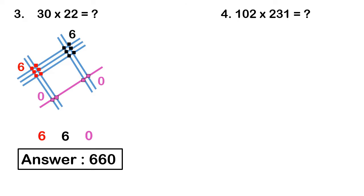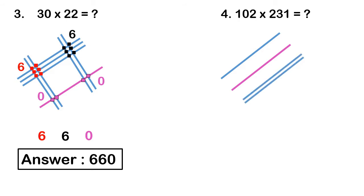The fourth question is 102 multiplied by 231. In the second question we solved three-digit numbers; now we do three-digit numbers with a zero. The zero is between 1 and 2 in 102. Draw 1 line for the first digit, then 1 pink line for the zero, then 2 lines. For the second number, draw 2 lines, then 3 lines, then 1 line. This is the complete line structure.